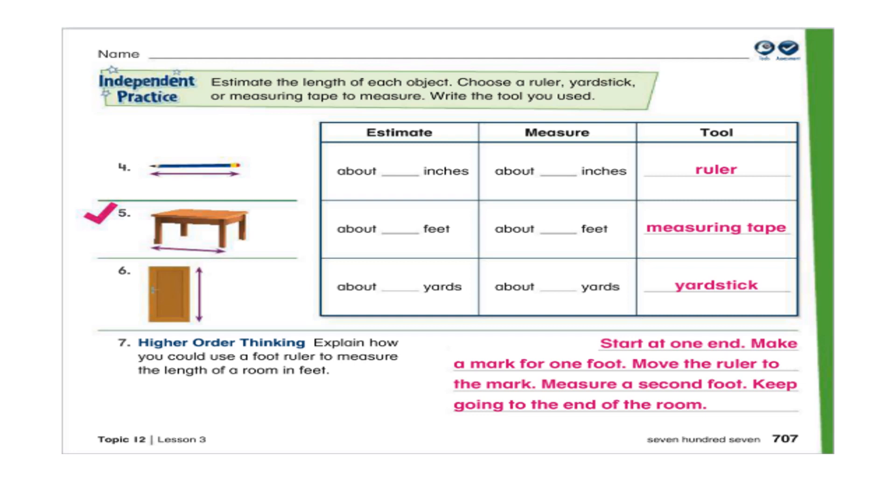So, here are some answers. For pencil, I use ruler. For table, I use measuring tape. And for door, I use yardstick. Your answers could vary. And then, how I measured my room. Start at one end. Make a mark for one foot. Move the ruler to the mark. Measure a second foot. And keep going to the end of the room.